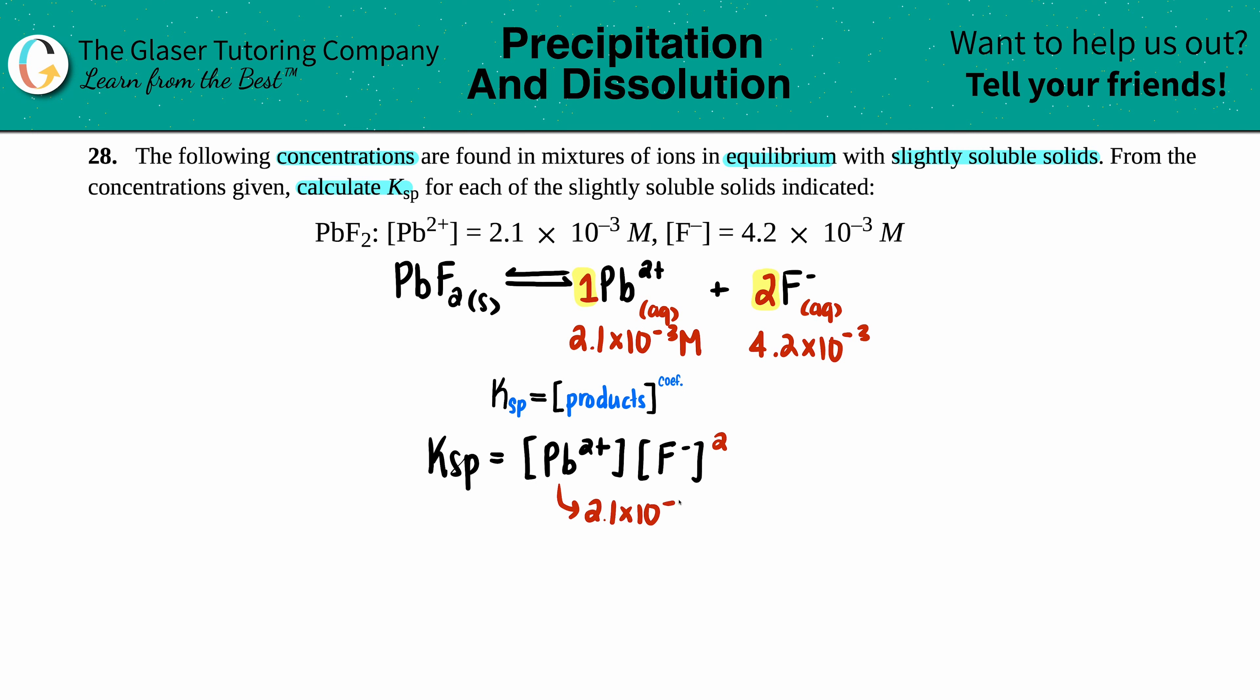So the Pb value is going to be exactly what they told us, 2.1 times 10 to the negative third, and then the F- is exactly what they told us, 4.2 times 10 to the negative third.